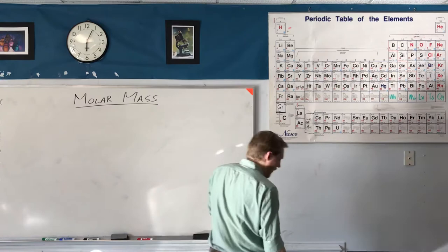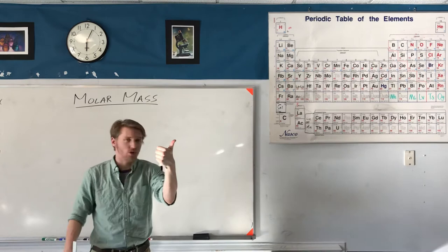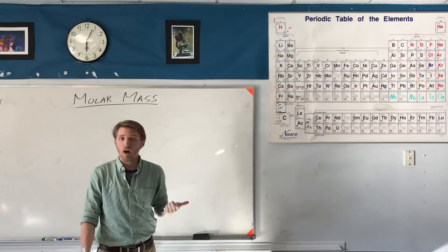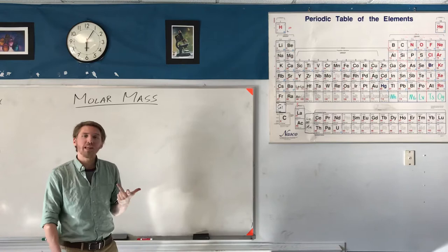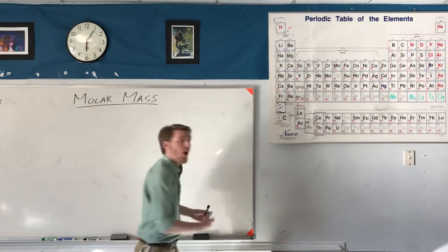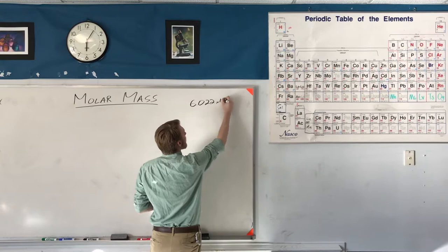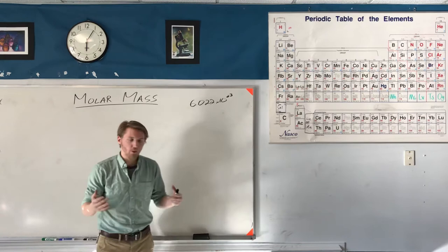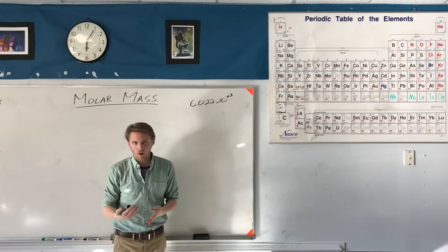Up to this point we talked about significant digits, how to calculate the mass of a molecule in atomic mass units, and we talked about the mole — what it means to have a certain number of something and how that relates to a mole. Remember that's related to Avogadro's number, which is 6.022 times 10 to the 23. So we've been able to bundle small particles and atoms into moles.